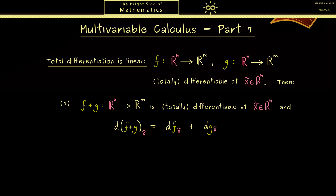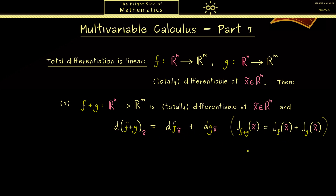If you prefer, you can also formulate this with Jacobian matrices. The Jacobian matrix of f plus g at the point x̃ is the sum of the Jacobian matrix of f with the Jacobian matrix of g. In short, for the differentiation we can pull out the addition sign, and this is one part of what we call linearity.